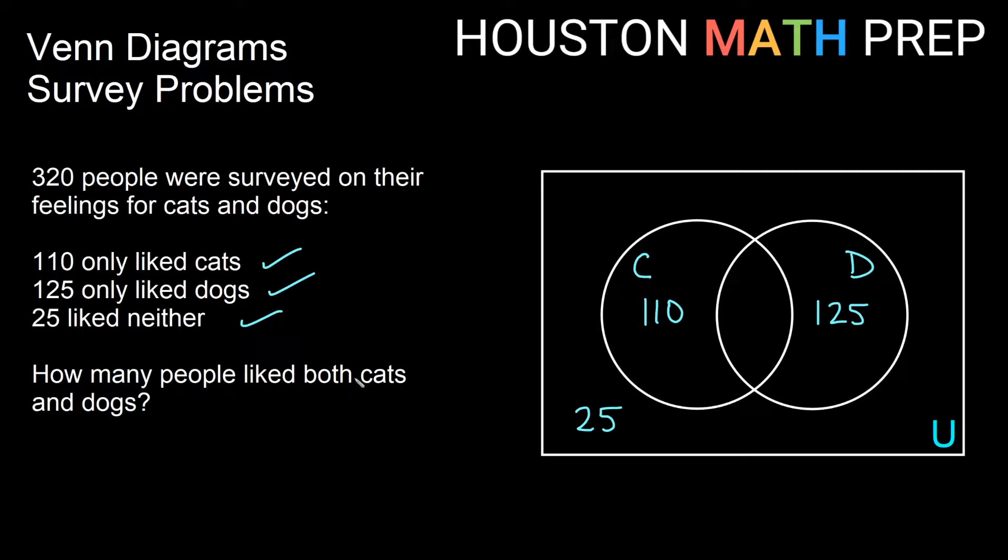And the question asks us, how many people liked both cats and dogs? Well, of course, isn't it going to ask us the one that we don't know? So how do we find it? Well, there's only one region left. And just like before, if we know the total that were surveyed, which is 320, I could add up all of the other regions and subtract them if I only have one region left and find that. So if I add 125 and 25, that's 150. If I add that 150 to 110, that's going to be 260. So I take my 320 total, I subtract the 260 people that are already in my survey there somewhere, and I get that there are 60 people left that must be in this intersection. And those are the people that like both cats and dogs from the survey.